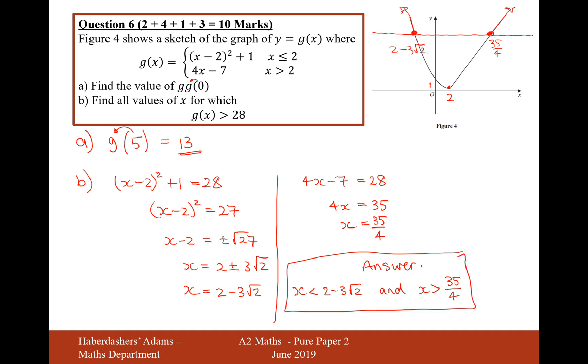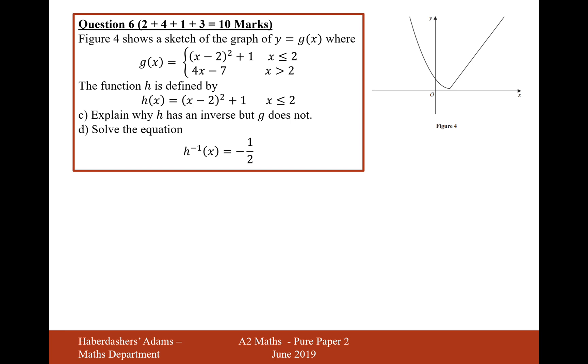There's a c and a d to this question as well, so let's now move on to that one. The function h of x is defined by h of x equals x minus 2 squared plus 1, for x is less than or equal to 2. The question is, explain why h has an inverse but g does not. So the function h is just the left-hand part of this graph here, so it's just that part of the graph.